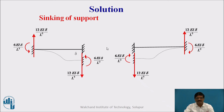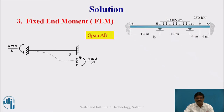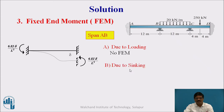Let us consider this sinking effect in the given problem. For span AB, there is no load, so there is no fixed end moment due to loading. However, due to sinking, a moment is produced. Both MAB and MBA are present due to sinking. As per our sign convention, anti-clockwise moments are negative, so both FEM_AB and FEM_BA equal −6EI·δ/L², which works out to be −31.25 kNm.